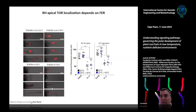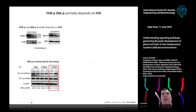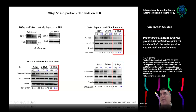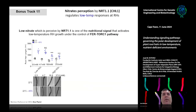TOR phosphorylation is dependent on Feronia — when Feronia is mutated, much less TOR is phosphorylated. Consequently, at 10°C we see much higher S6 kinase phosphorylation by TOR in wild type, as expected. When Feronia is knocked out, or in a Feronia kinase-dead mutant where the kinase is non-functional, this phosphorylation disappears, specifically at 10°C.